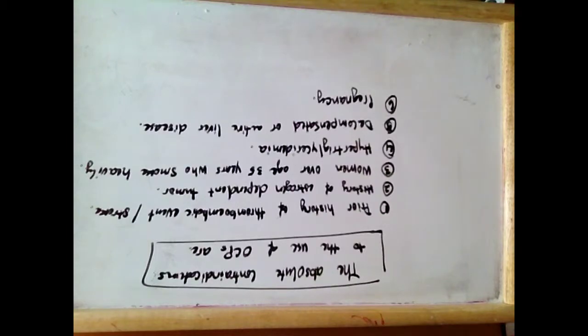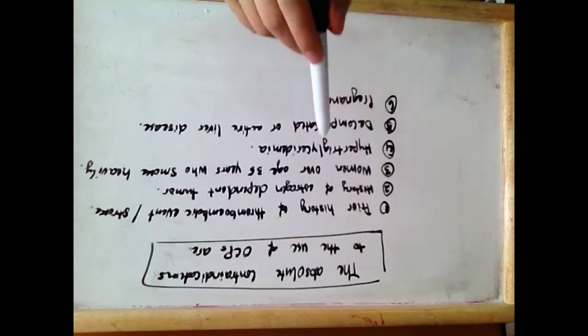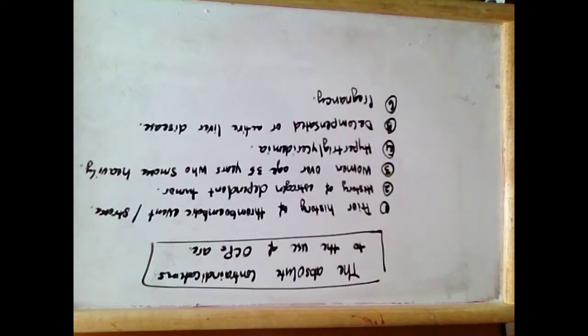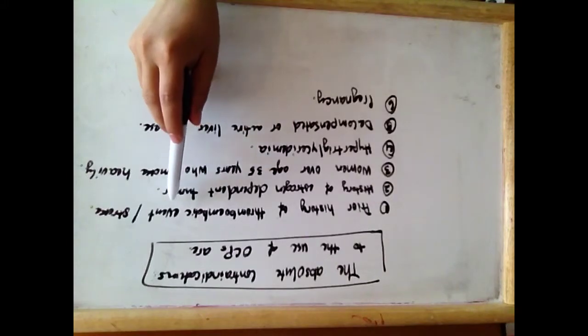The absolute contraindications to the use of oral contraceptive pills are: patients who have a history of thromboembolic events or stroke.